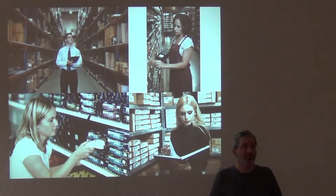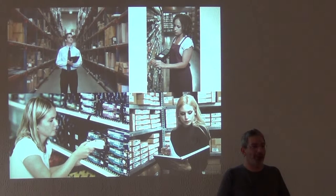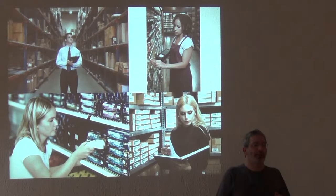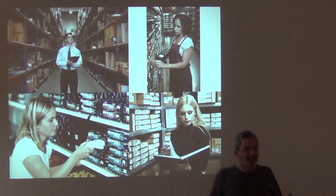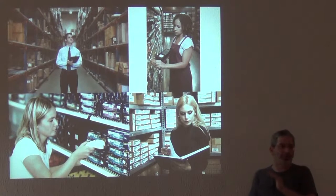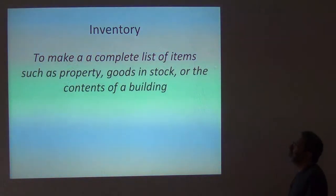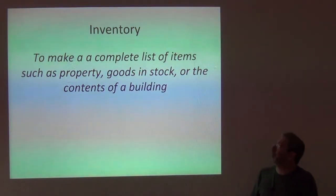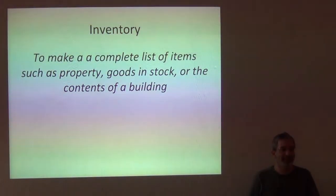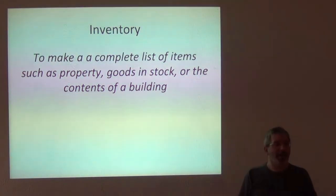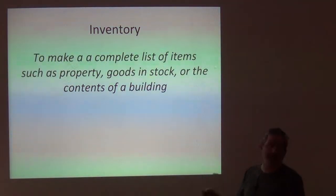If you're working at a car dealership, and the owner says, 'I want an inventory of all the cars on the lot,' you don't want to come back and say, 'We have between 90 and 100 cars.' Rather, he wants to know the make and model of every single one of those cars individually. So an inventory is to make a complete list of items such as property, goods in stock, the contents of a building, or the species present at a site. And that's a very important word — a complete list.